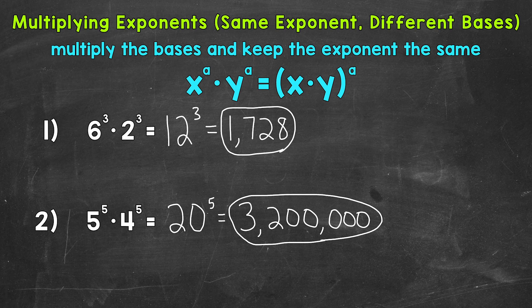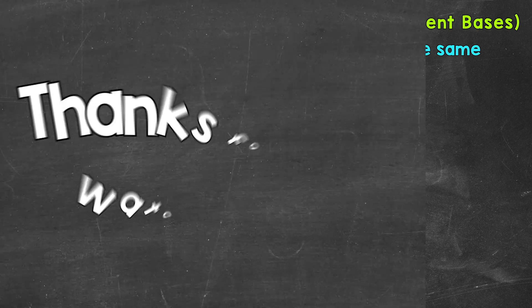So there you have it. There's how you multiply exponents, same exponents, but different bases. We multiply the bases and then keep the exponent the same. I hope that helped. Thanks so much for watching. Until next time. Peace.